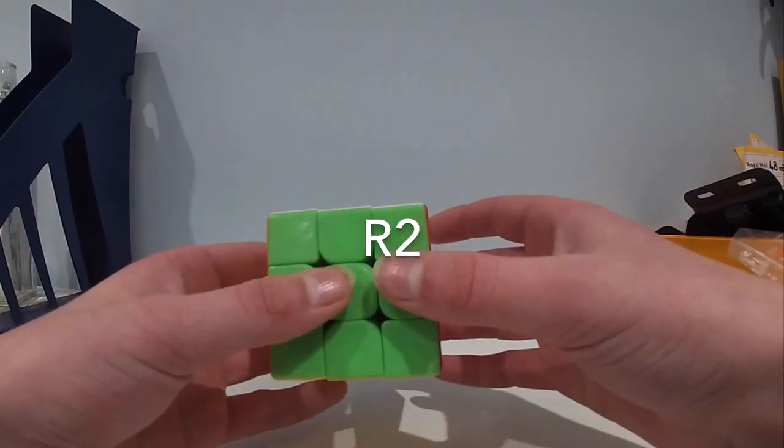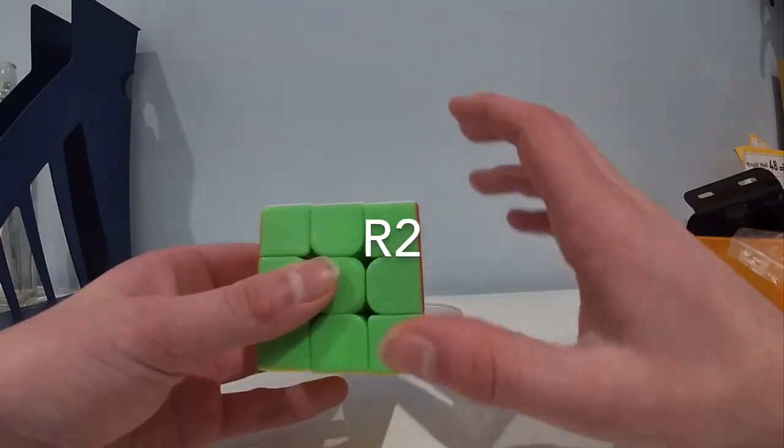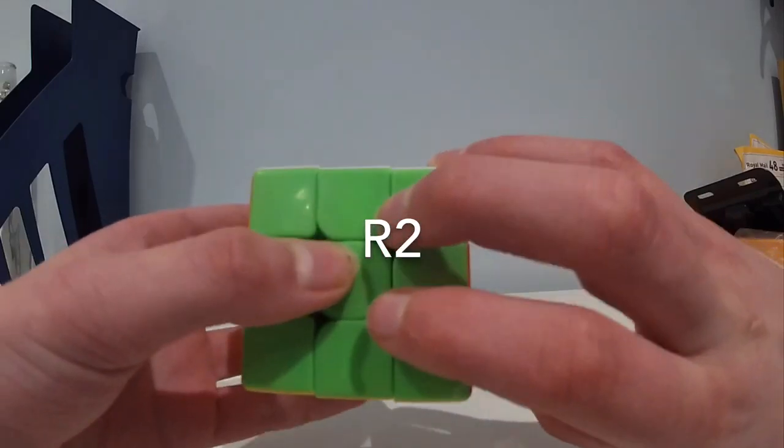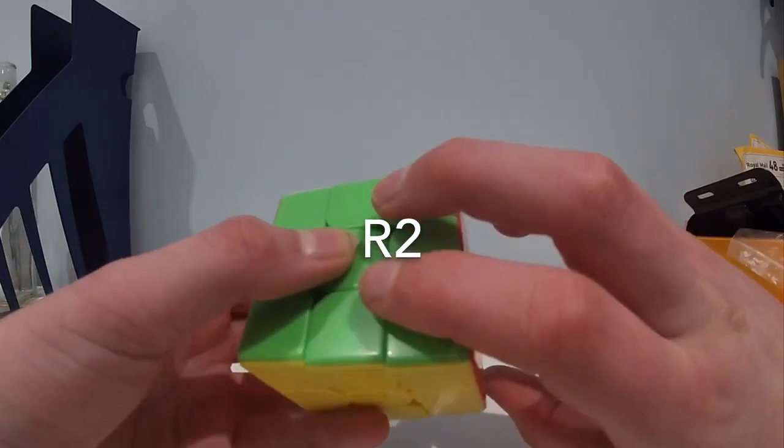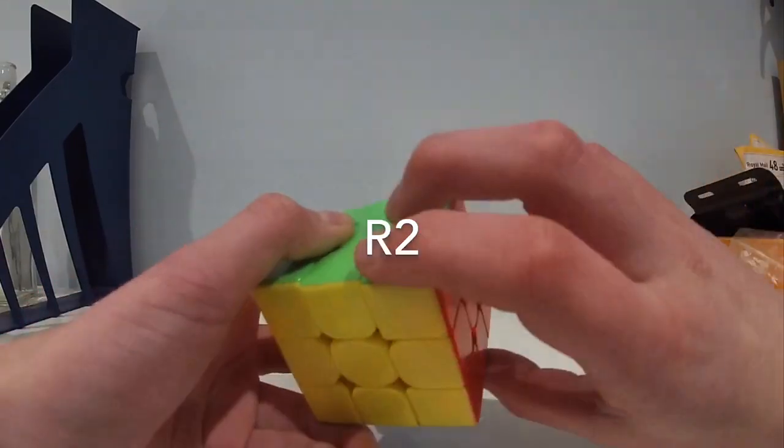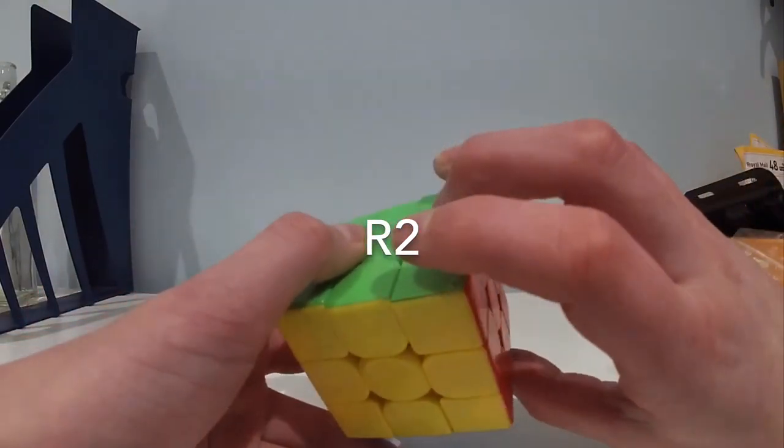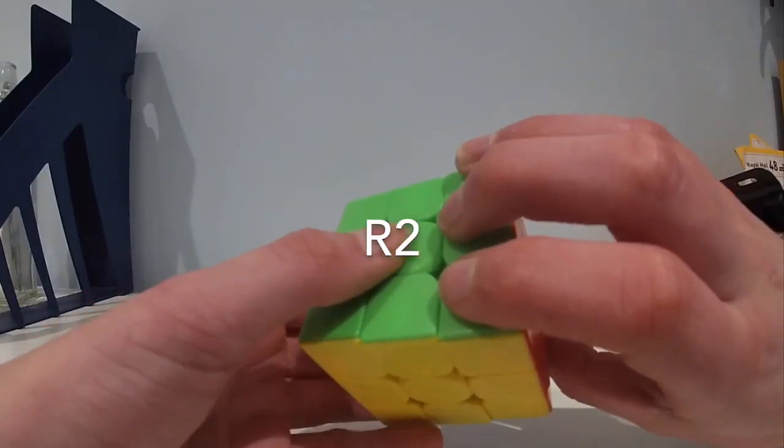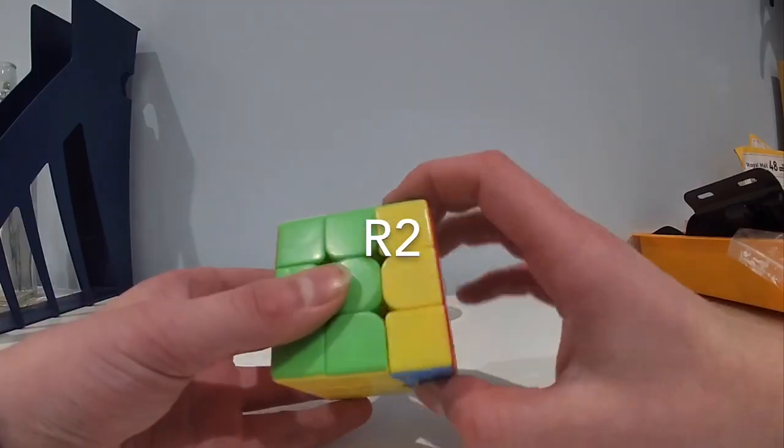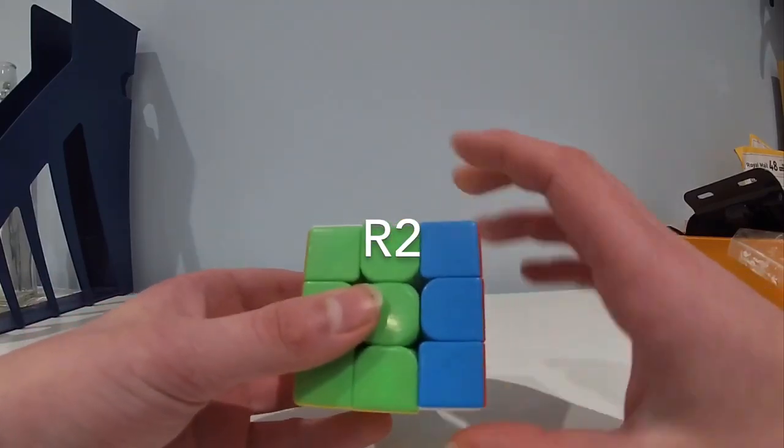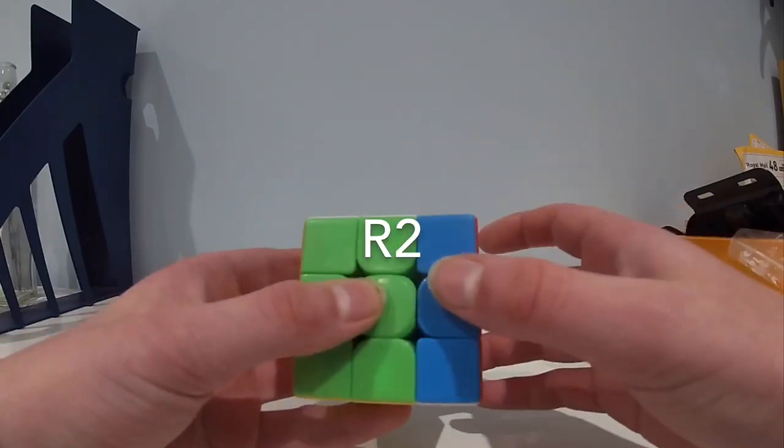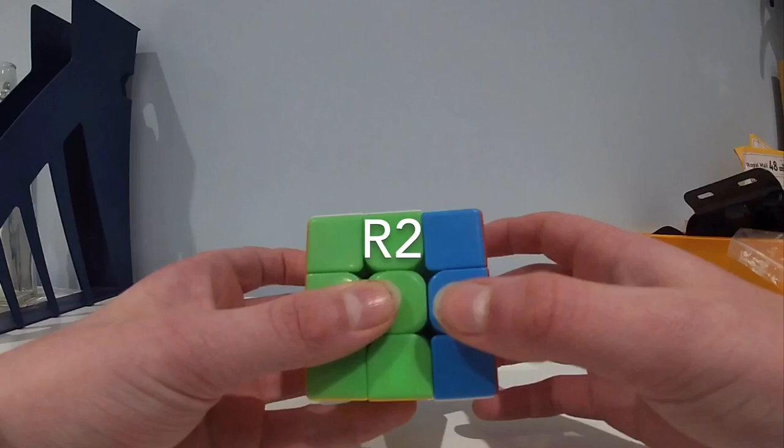Instead what you should do is first move your hand all the way down to the back. It is an uncomfortable position but with practice it can be done. Place your thumb on the back piece and your three fingers on the front and do a full 180 degree wrist turn. This is quicker and also leaves you in home grip.